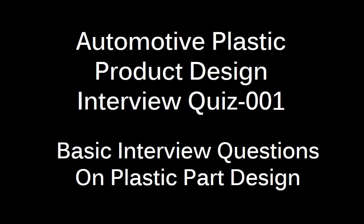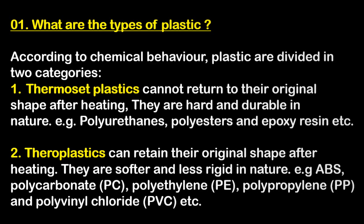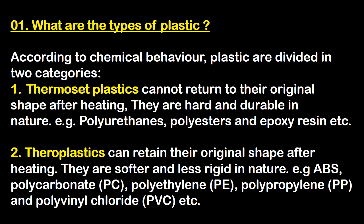In simple language, the first question is: what are the types of plastic? According to chemical view, plastics are divided into two categories. First is thermoset plastic — it cannot be returned to its original position after heating; they are hard and durable in nature. For example: